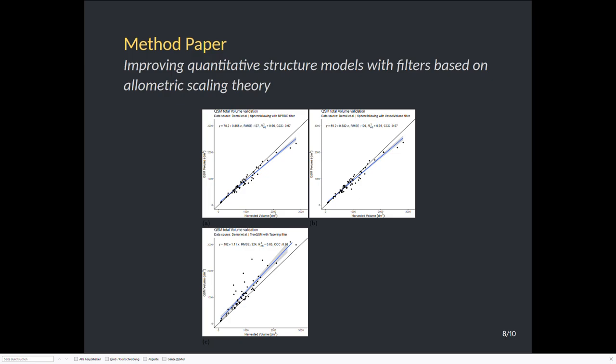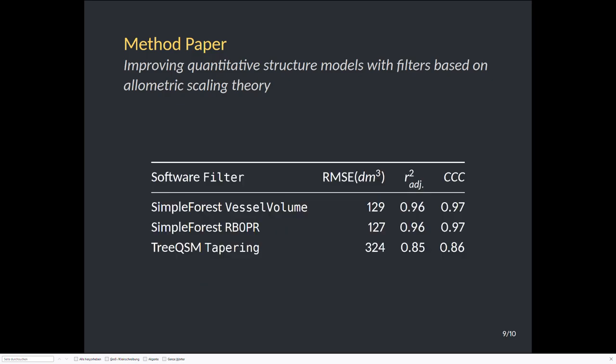We just see the data is not spread so much. I compare here 66 trees from the Demol et al. paper. If we look at what Demol et al. published with TreeQSM, another QSM method, the data has a lot more outliers. I'm quite sure TreeQSM will also benefit from the same filter routine as soon as it's implemented. But for now, SimpleForest with the new filters makes really astonishing results.